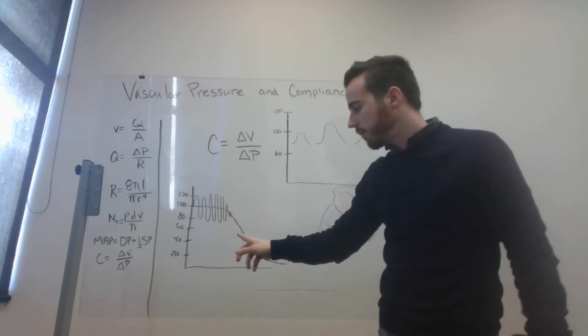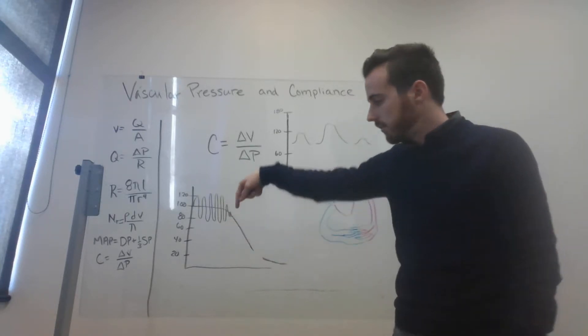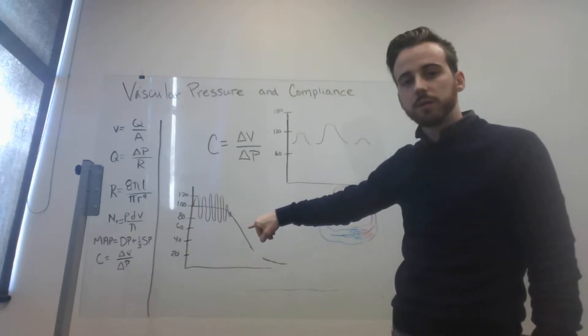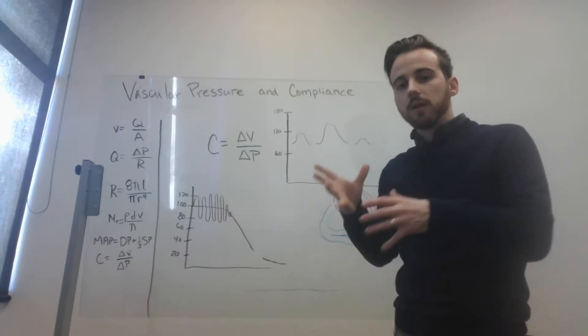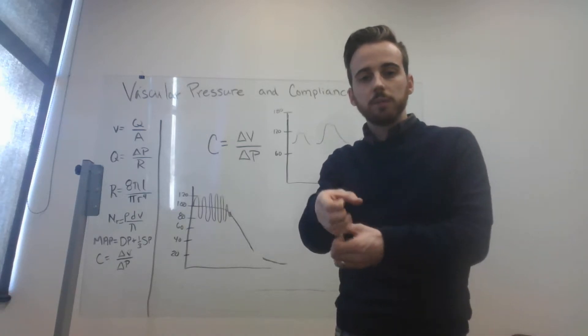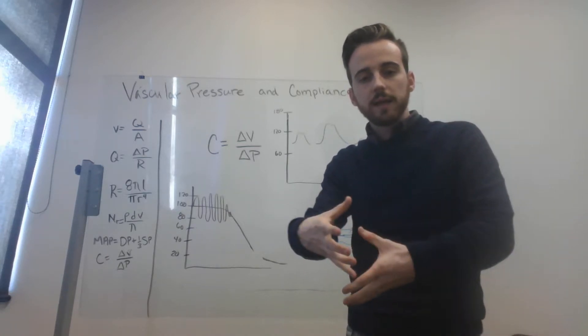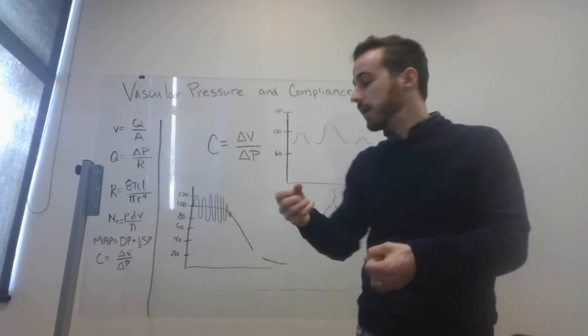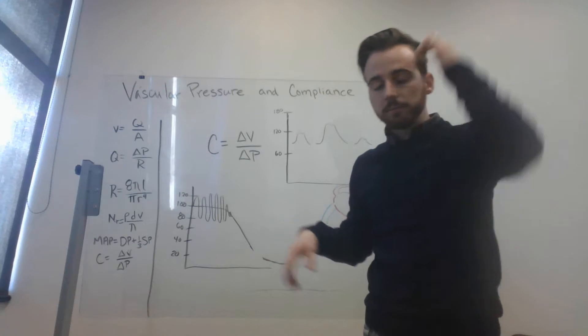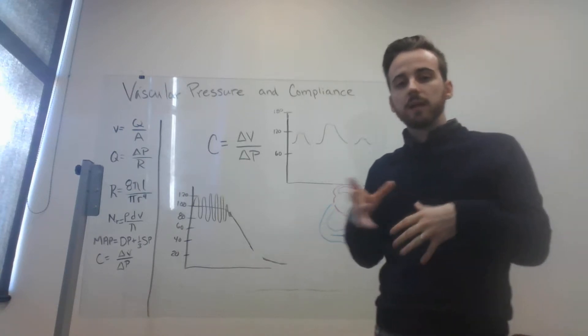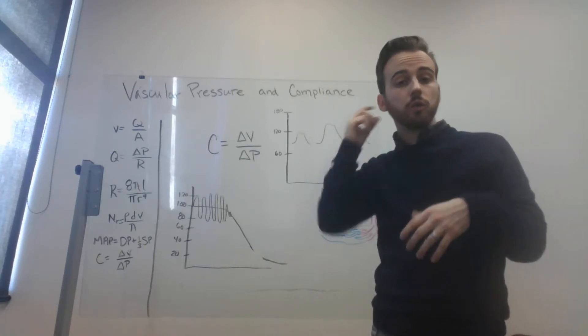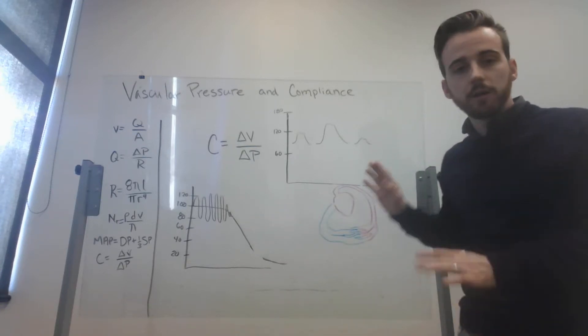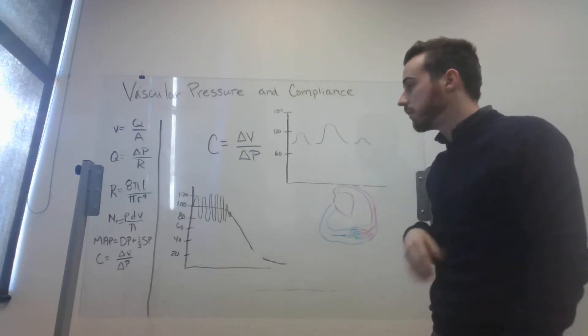One other note about arterioles. This is where our blood pressure drops off. This is also where blood pressure can be most regulated. The diameter of our arterioles can be constricted or dilated. It has alpha and beta adrenergic receptors that perform that function. And that allows the body to very tightly control blood pressure. That happens right there in the arterioles. Very important aspect of that.